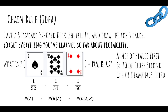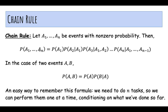The chain rule allows us to decompose the probability of n events A1 through An into a sequential order: the probability of A1 happening, then A2 given A1 happened, A3 given A1 and A2 both happened, and so on, until An given A1 through A(n-1). In the case of two events, this is just the definition of conditional probability.